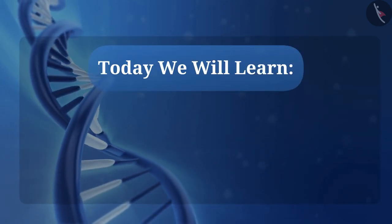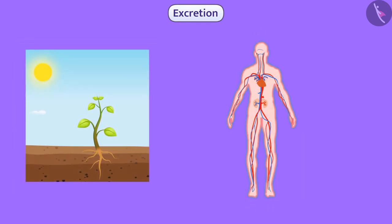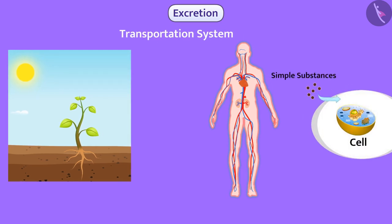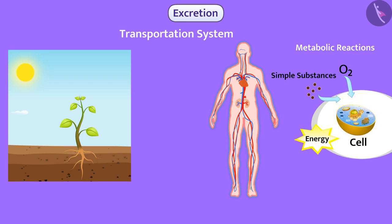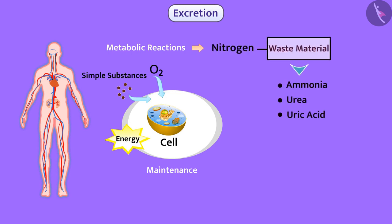Today we will learn about excretion. In the previous video, we learned that oxygen and nutrients are transported to every cell of the body with the help of the transportation system. With the help of these simple substances and oxygen, metabolic reactions take place in the cell, which helps in energy generation and maintenance activities. During these metabolic activities, nitrogen-containing waste material gets generated.